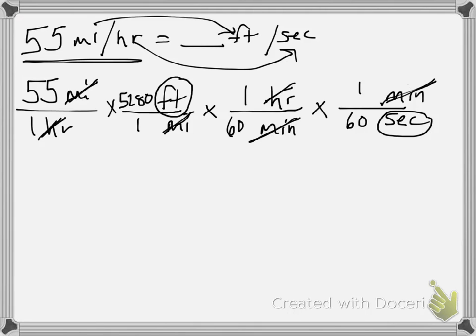And what am I left with for units on the top? I'm left with feet, and everything else has been canceled. And on the bottom, I'm left with seconds, and everything else has been canceled. So this is great, because now I have a unit rate, feet per second. That's where I'm going. So I just need to multiply across. I need to do 55 times 5,280 times 1 times 1. This is a big number, 290,400. Now I need to multiply across the bottom. 1 times 1 times 60 times 60 is 3,600.